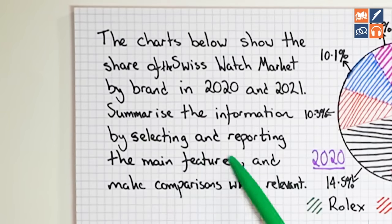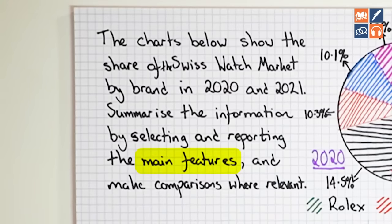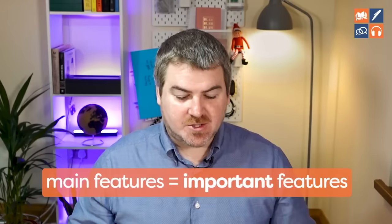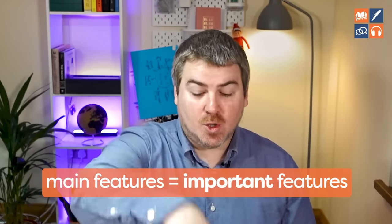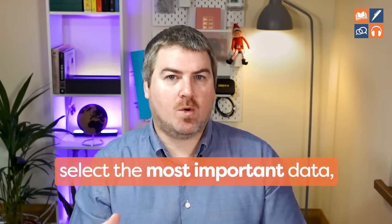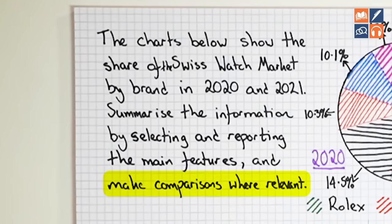The question says: summarize the information by selecting and reporting the main features and make comparisons where relevant. A different way of thinking about main features is important features. It's asking you to look at the data and select the most important data — not all of it. You should never attempt to write every single piece of data you see. And make comparisons where relevant — only if they're important. If there aren't any important comparisons, you don't have to write about them.